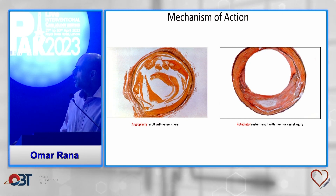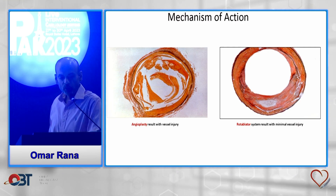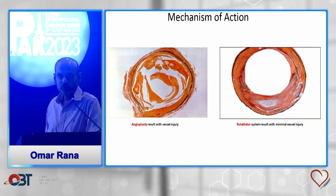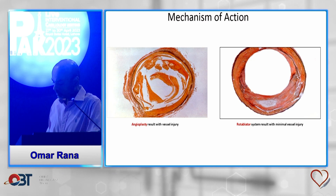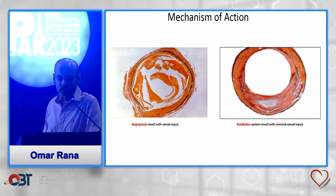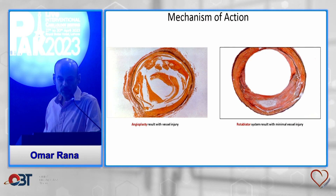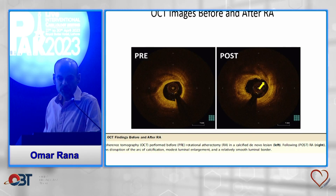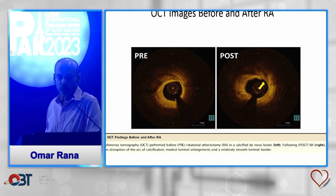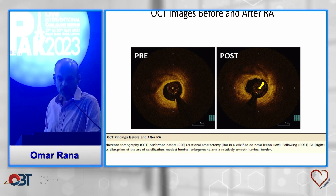On the left, you've got balloon angioplasty, which shows the vessel's intima has been torn. On the right, you can see the rotoblation with minimal vessel injury. And those are OCT images. In the pre image you can see a ring of calcium, and in the post, on the two o'clock position, you can see the calcium has been cracked.